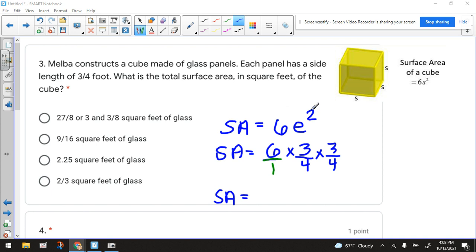Surface area equals six times the edge squared. Which, by the way, the edge squared means the edge times the edge. The edge is a factor twice.